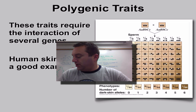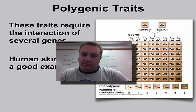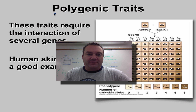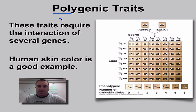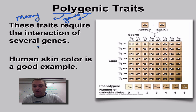Welcome to part 12 from chapter 11. We're going to talk about another interesting gene interaction called polygenic traits. If you remember from previous episodes when we talked about proteins — especially polypeptides — 'poly' is a prefix that means many, and 'genic' refers to genes. So this involves the interaction of several different genes, not just alleles.